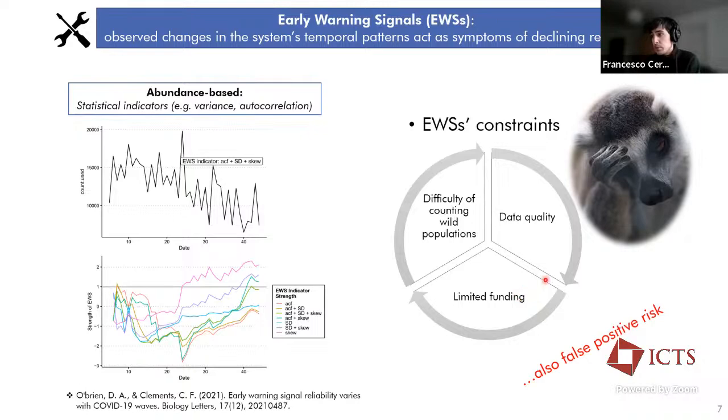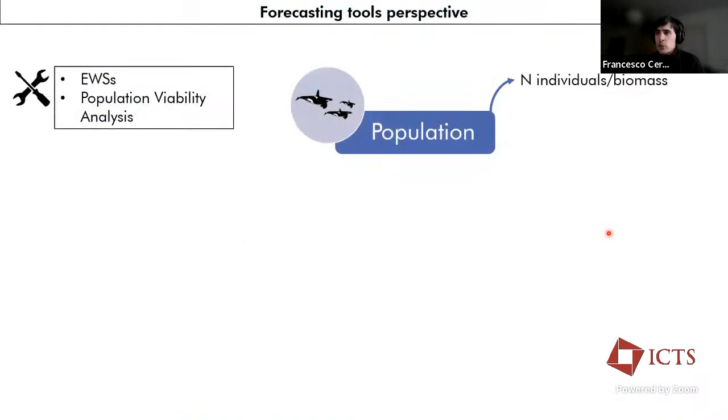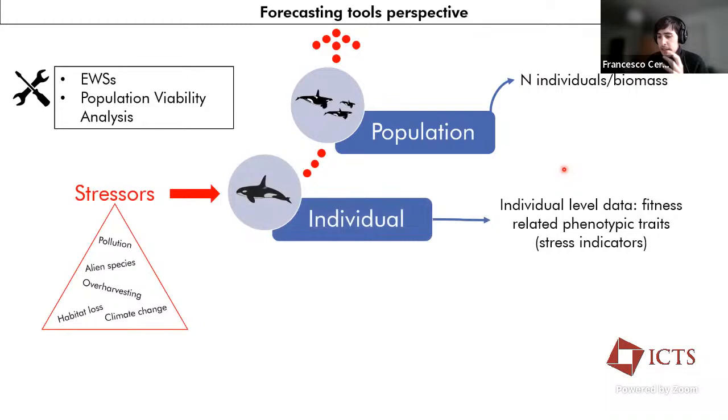Well, the early warning signals and other tools, like population viability analysis, they share the same perspective, which is the population level perspective, because we measure, we monitor biomass, or the number of individuals through time, as the quantities that we are interested in. But if we think about it, the stressors, like the anthropogenic ones, they start to act at the individual level.